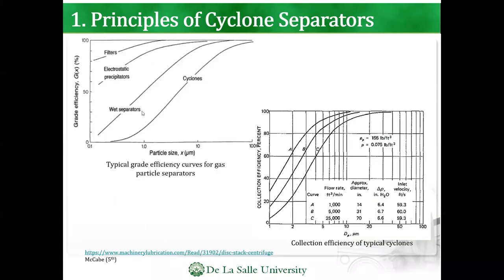For some principles: typical grade efficiency curves for gas-particle separators show that filters are really good in terms of efficiency. Cyclones are the least efficient, especially when particles are small or less than one micron — the efficiency is really, really poor.